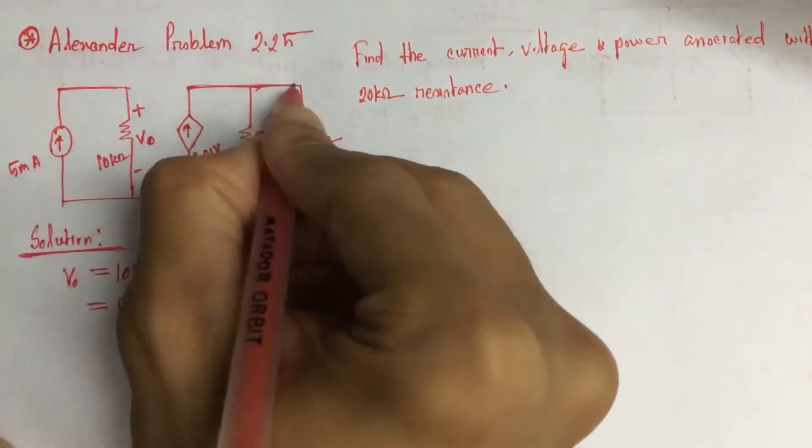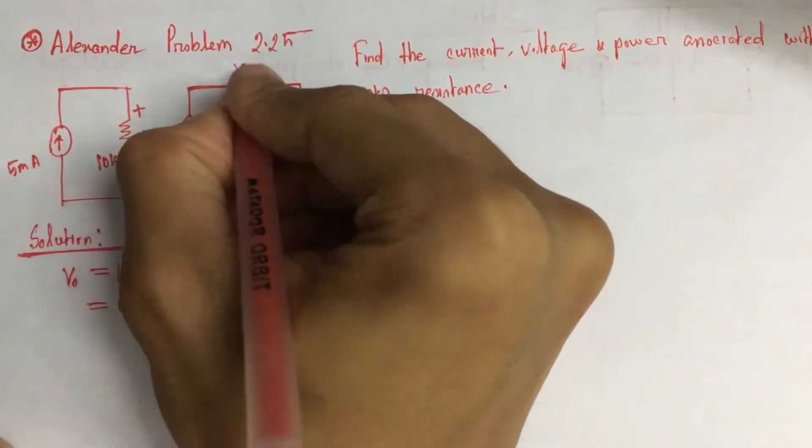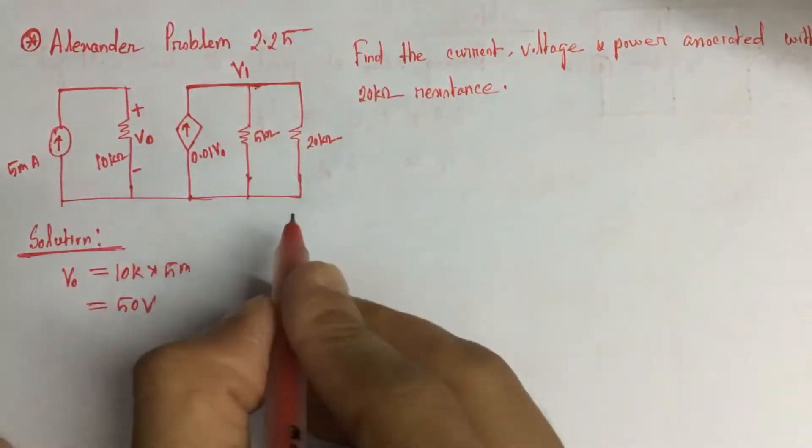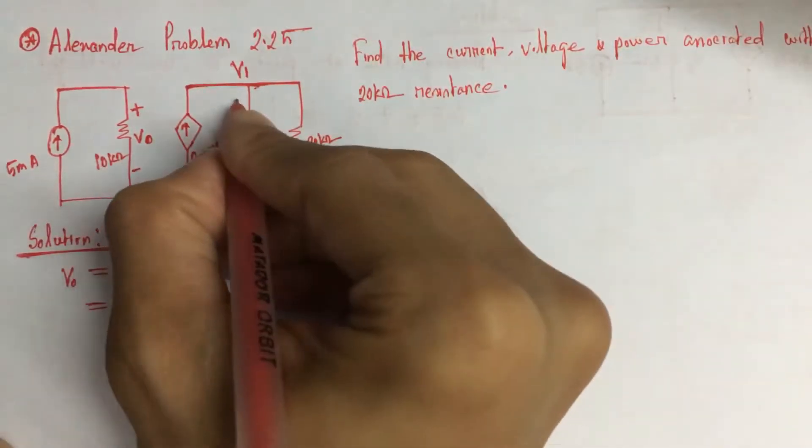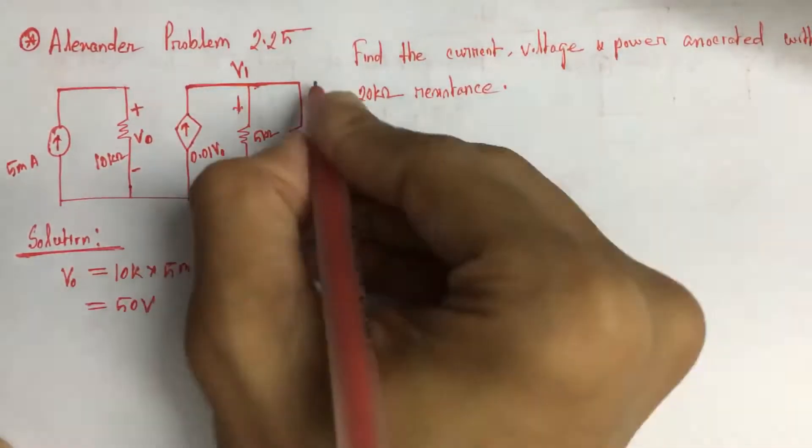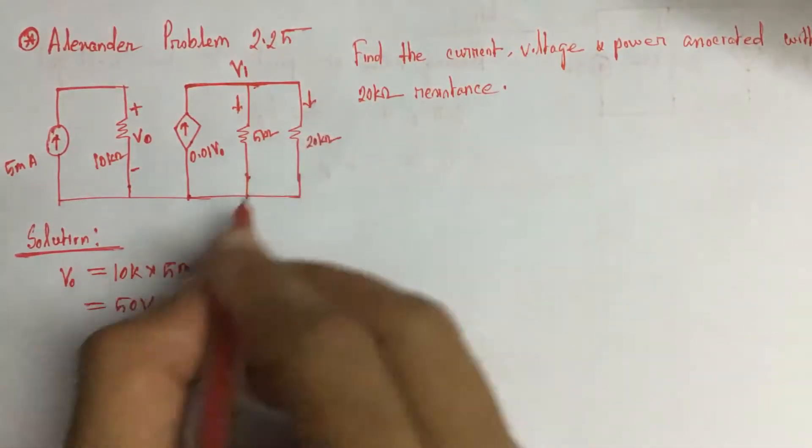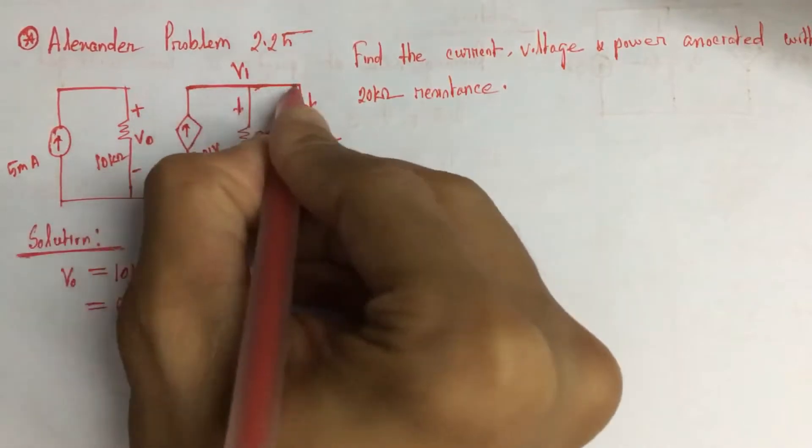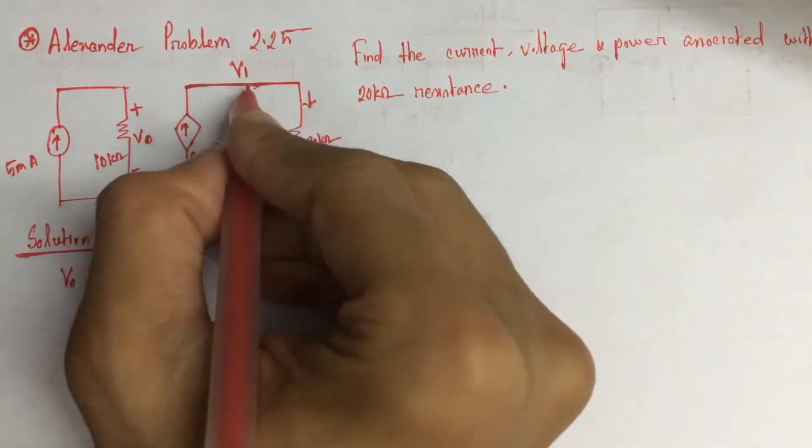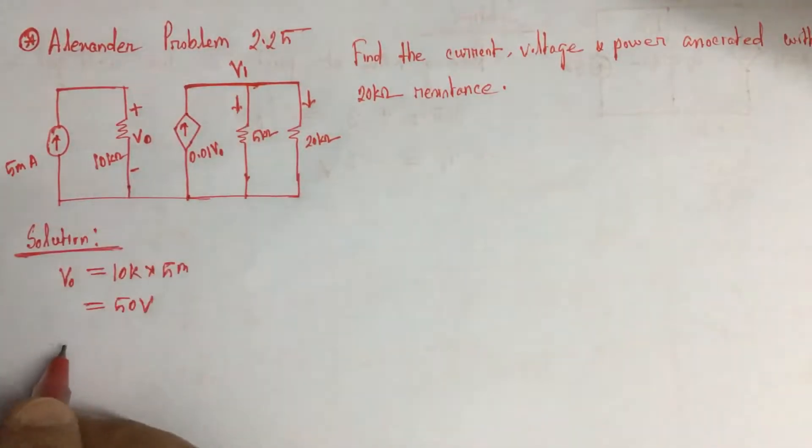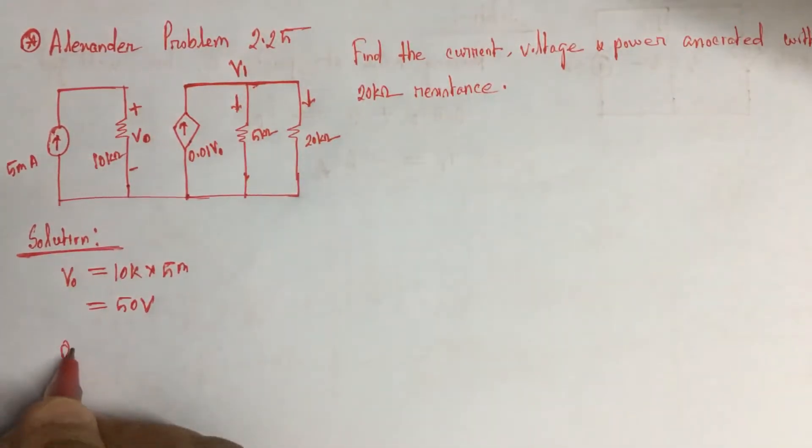Now let the voltage at this point be V1. Let the current through this 5 kohm resistance be going downward, and the current through the 20 kohm resistance also going downward. Now applying Kirchhoff's current law at this point, we will have 0.01V0 equals V1 by 5 kohm plus V1 by 20 kohm.